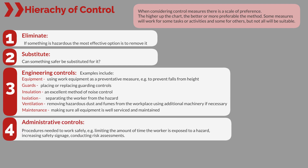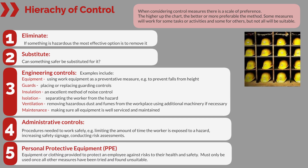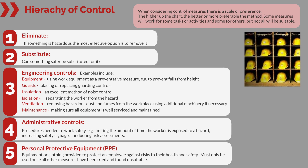Step four: administrative controls — procedures needed to work safely, for example limiting the amount of time the worker is exposed to a hazard, increasing safety signage, and conducting risk assessments. Step five: personal protective equipment, PPE — equipment or clothing provided to protect an employee against risks to their health and safety. PPE must only be used once all other measures have been tried and found unsuitable.